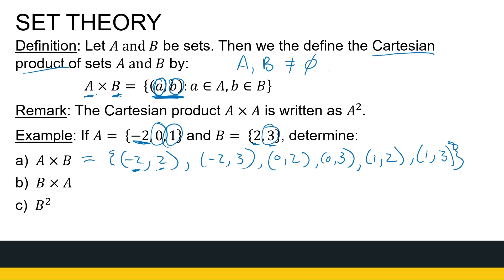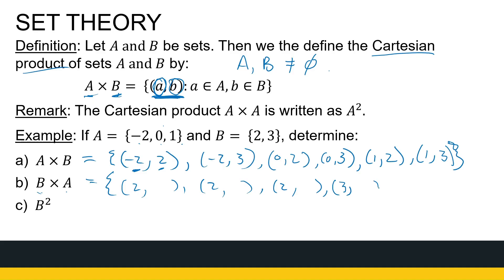B's Cartesian product with A looks totally different — B × A does not generate what we got for A × B. It's not a commutative operation. The first entry must come from B, so: (2, minus 2), (2, 0), (2, 1), (3, minus 2), (3, 0), (3, 1). Both sets have six entries, but they look totally different.